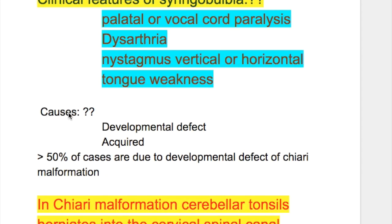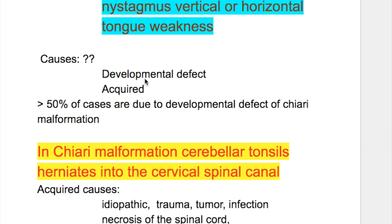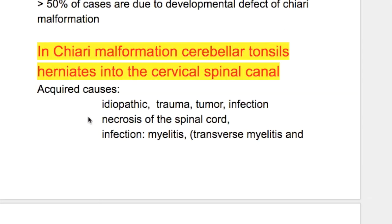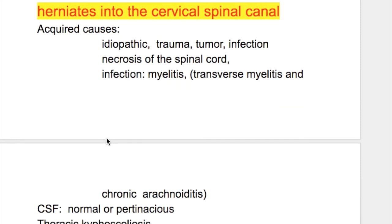The causes of syringomyelia may be developmental or acquired. About 50% of cases are due to the developmental defect of Chiari malformation, in which the cerebellar tonsils herniate into the cervical spinal canal. Acquired causes may be idiopathic, trauma, tumor, infection, or necrosis of the spinal cord.